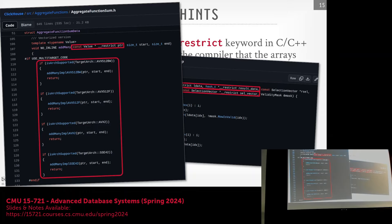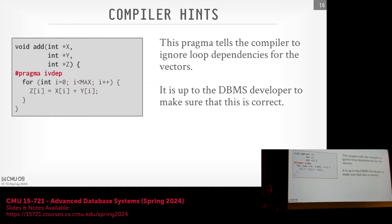An alternative to restrict is compiler pragmas. The ivdep pragma (ignore vector dependencies) tells the compiler to ignore aliasing checks and auto-vectorize. OpenMP has its own #pragma omp simd. These approaches say 'ignore dependency checks and vectorize this' — it's up to the programmer to ensure correctness, because the compiler will do what you tell it.